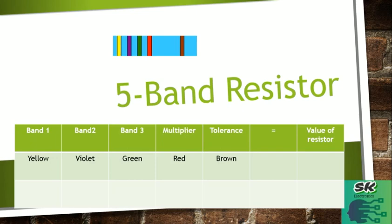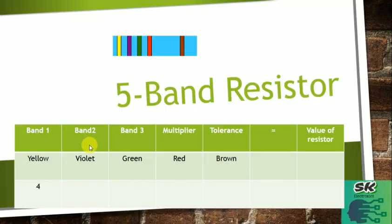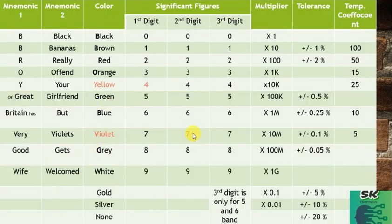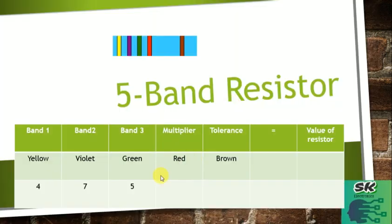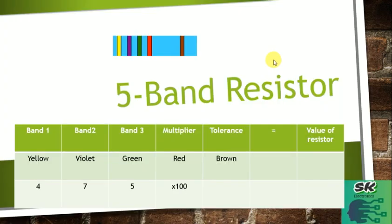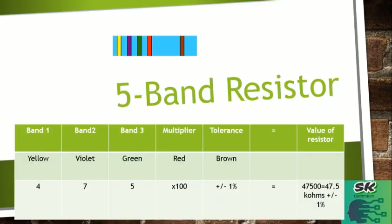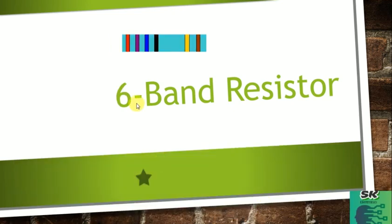Next we have a five-band resistor. The colors are yellow, violet, green, red, and brown. Yellow as the first digit is 4, violet as the second digit is 7, green as the third digit is 5, red as the multiplier is 100, and brown for tolerance is ±1%. So our value comes out to be 47,500 ohms, which is 47.5 kΩ ±1%.